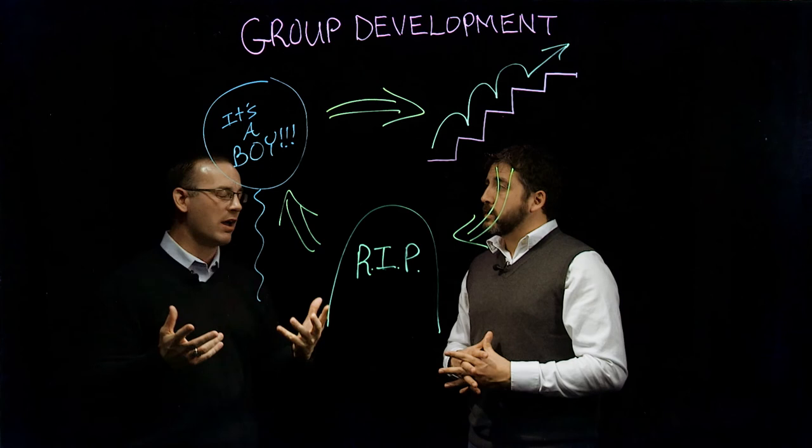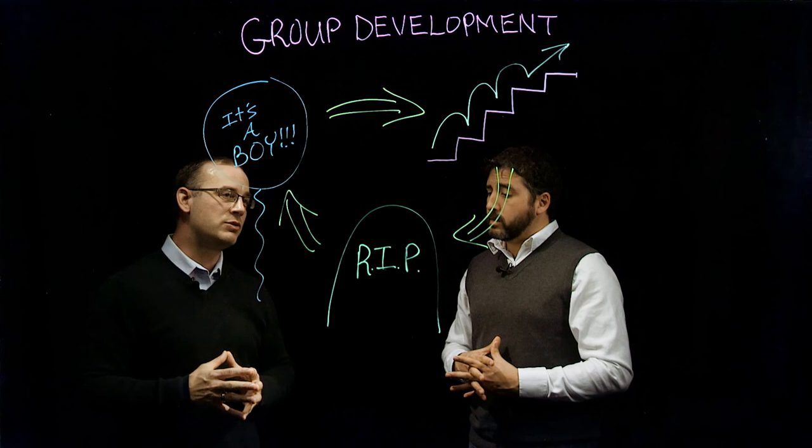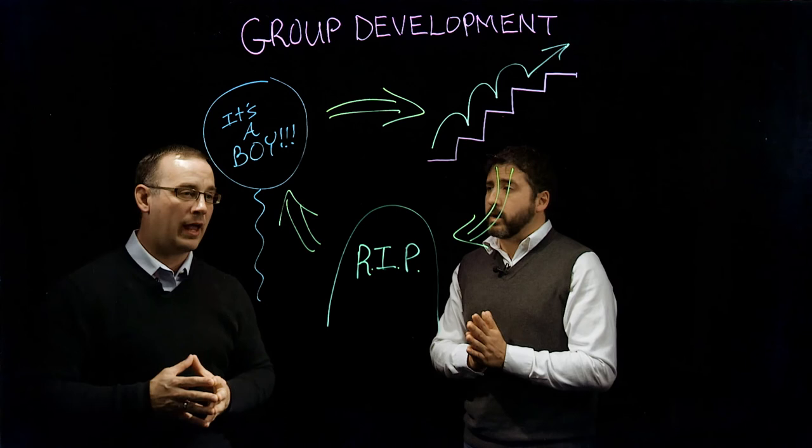Can they kind of slip back into their infancy, if you will? According to this cyclical model, a team would not be able to regress or slip back. You're always progressing, you're always aging and maturing as a team. So those might be two critiques of the model.